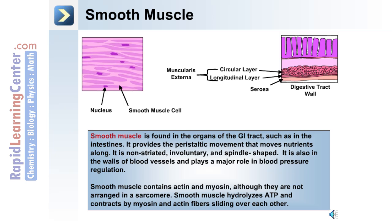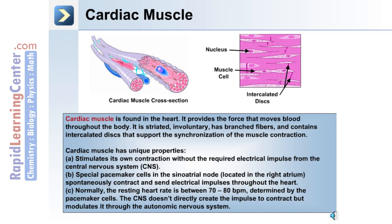Smooth muscle is non-striated, involuntary, and spindle-shaped. It's also present in the walls of blood vessels and plays a major role in blood pressure. Smooth muscle contains actin and myosin, although they're arranged differently and not in a sarcomere as in skeletal muscle. Smooth muscle hydrolyzes ATP and contracts by myosin and actin fibers sliding over each other.